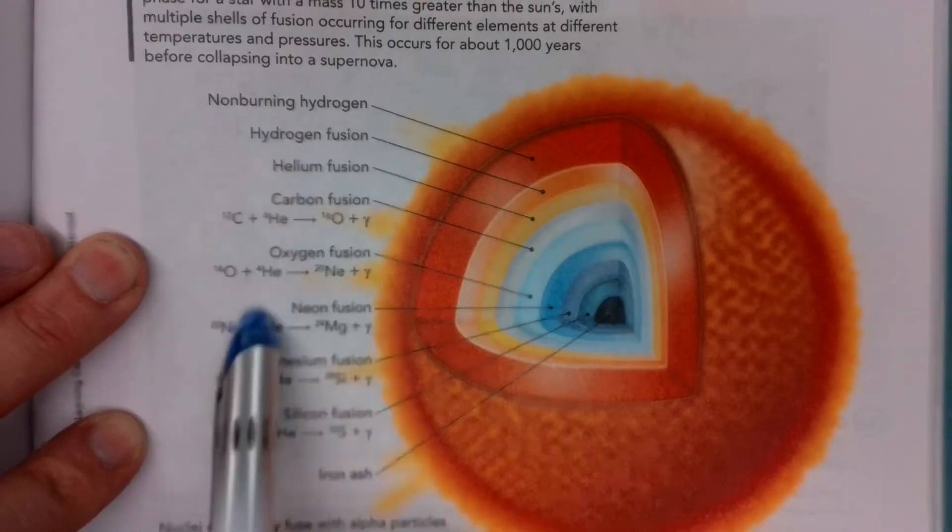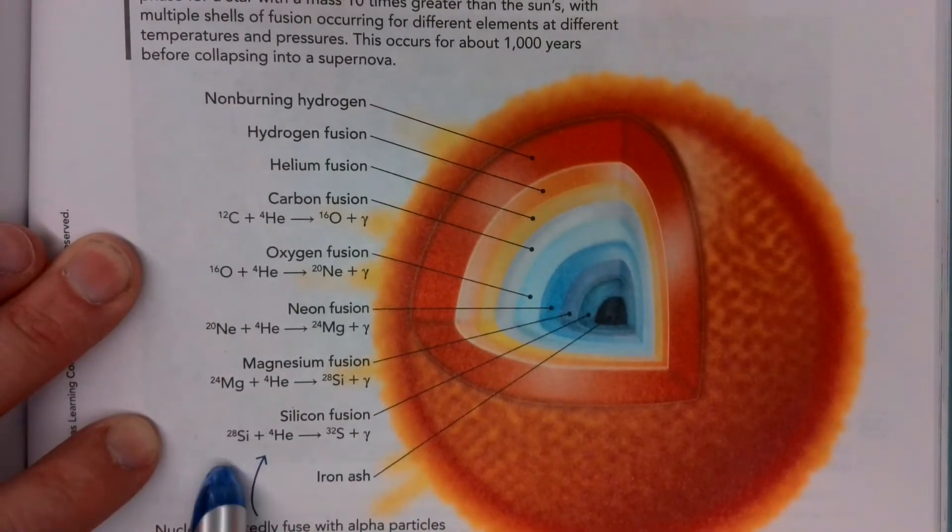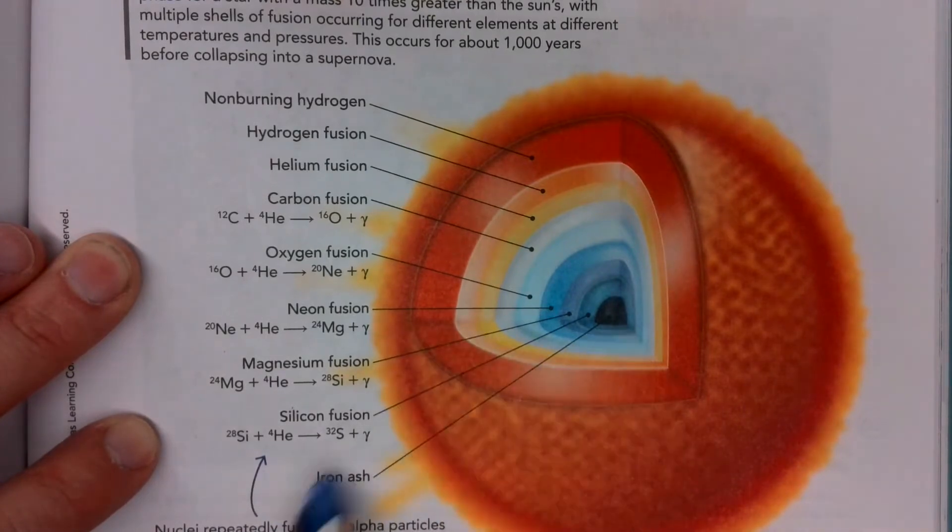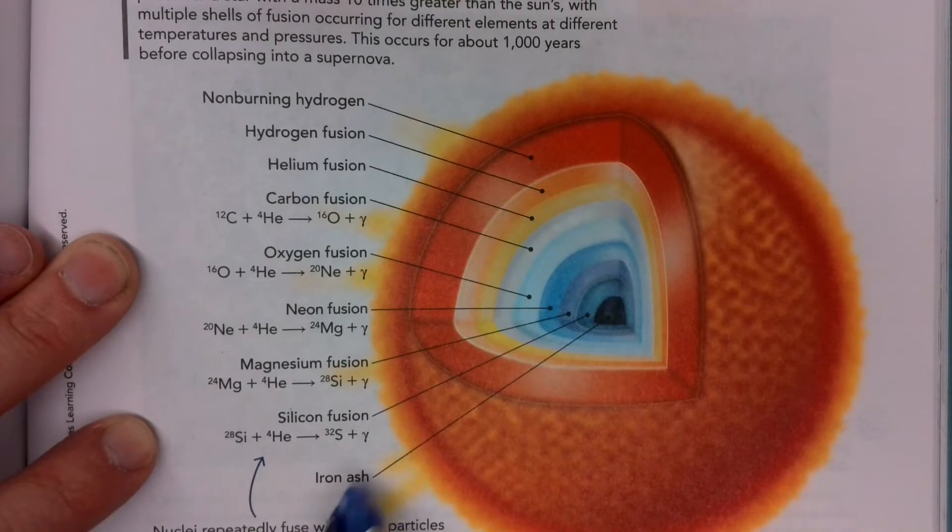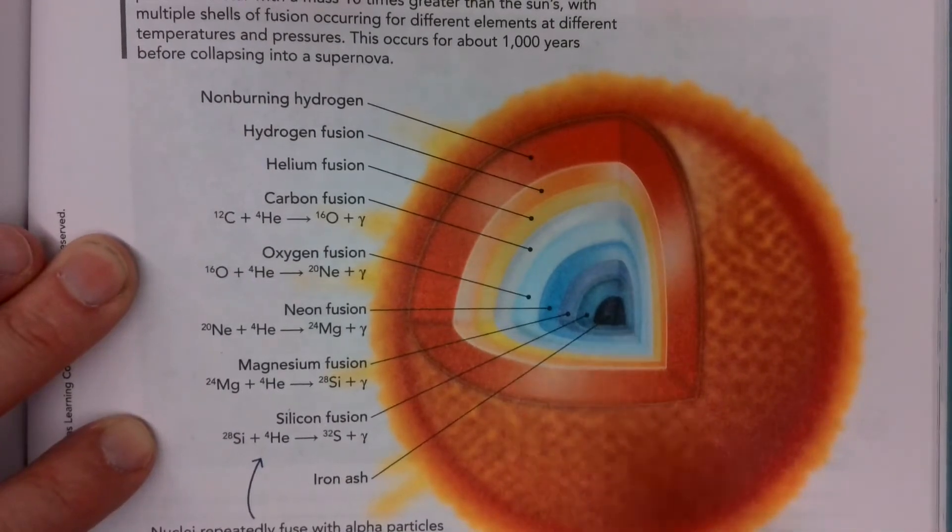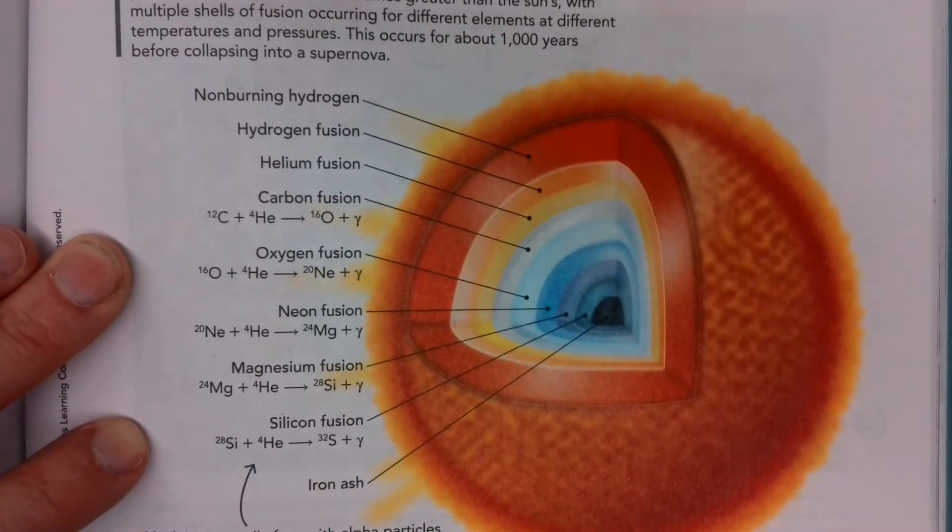As we work our way through, we can go all the way down in this example to form sulfur. And the biggest elements that stars can form is iron at the very center. The heavier elements are actually formed during supernovas, and when these stars collapse and break down.